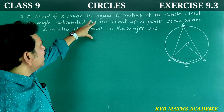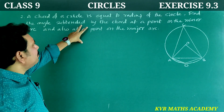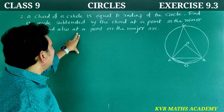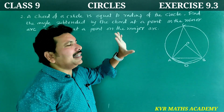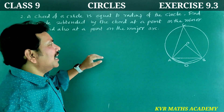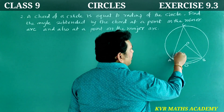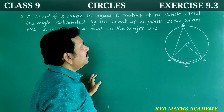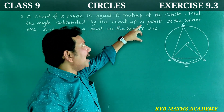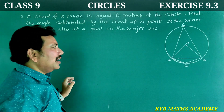Second question: A chord of a circle is equal to the radius of the circle. Find the angle subtended by the chord at a point on the minor arc and also at a point on the major arc. Suppose chord AB is equal to the radius OA and OB of circle O.